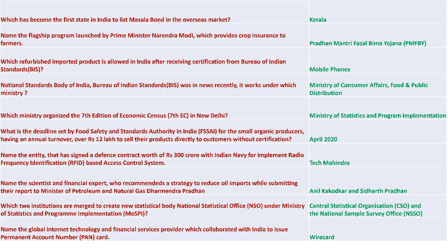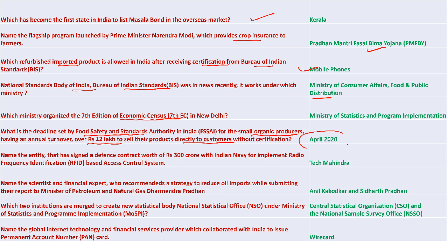Kerala became the first state in India to list Masala Bonds in overseas markets. Pradhan Mantri Fasal Bima Yojana is the flagship crop insurance program launched by PM Modi. Refurbished imported mobile phones are allowed in India after receiving certification from the Bureau of Indian Standards. The Ministry of Consumer Affairs, Food and Public Distribution is the ministry under which the Bureau of Indian Standards works. MoSPI is organizing the seventh edition of the Economic Census.